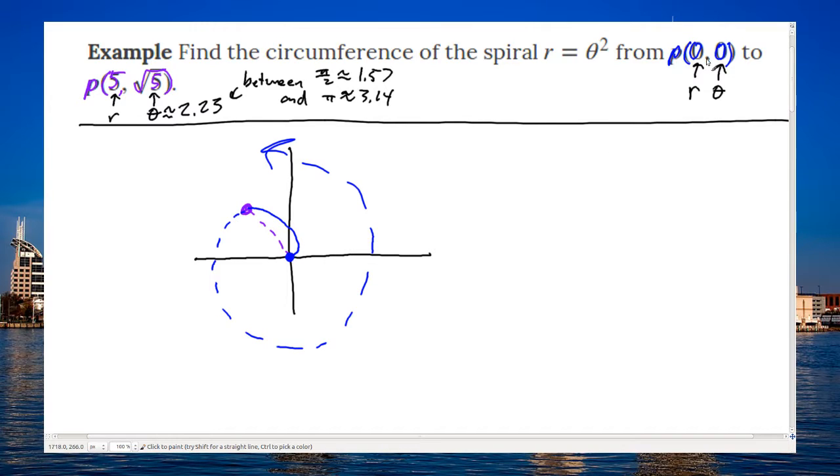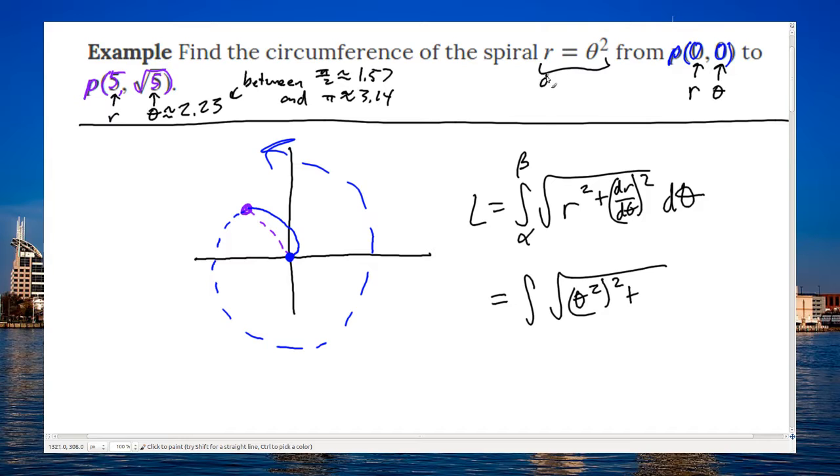But we only want it between these two points here, the blue point and this purple point. And this is just as easy as using the formula. The picture doesn't actually help me because all I need for the length is my alpha and my beta square root. I need R squared, and I need its derivative to be squared. Well hey, there's my radius R. So that's going to be theta squared, all squared. Its derivative, dr dtheta, is 2 theta. So there's that.